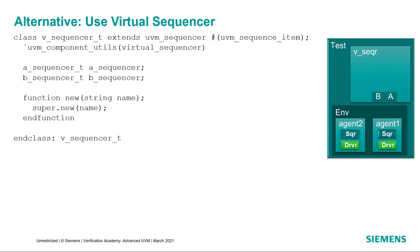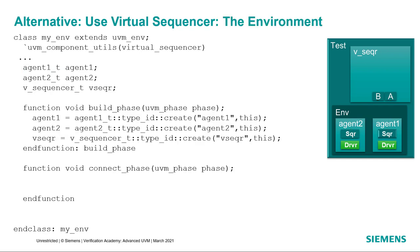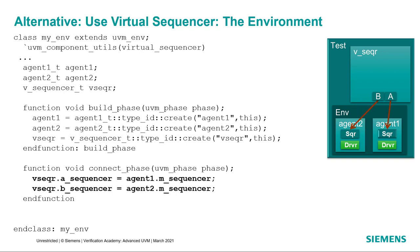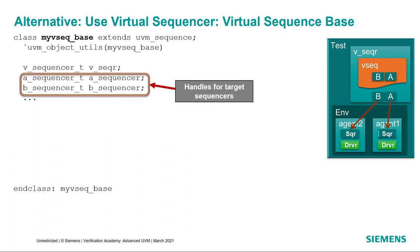An alternative approach is to use a new component called a virtual sequencer. We extend this from the base UVM sequencer component and register it with the factory. Inside the virtual sequencer, we declare handles for the sequencers on which the sub-sequences will eventually run. Since this component is extended from a UVM base class, we call super.new from its constructor. In the environment, we instantiate the virtual sequencer along with the agents we'll need, which have sequencers that match the sequencer types we declared in our virtual sequencer. Since we're dealing with components, we use the connect phase to make the actual assignments of the virtual sequencer handles to the agent sequencers. Since we're using the virtual sequencer, our virtual sequence base type will be a little different. Just like in the previous example, the virtual sequence base has handles to the target sequencers, but this base virtual sequence also has a handle to the virtual sequencer on which it is going to run.